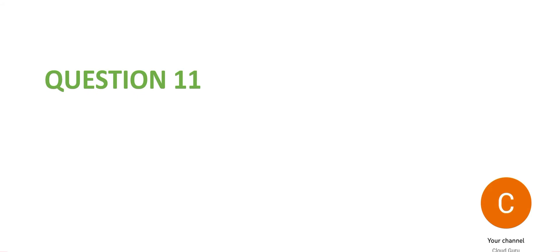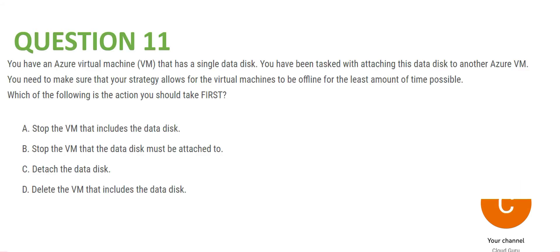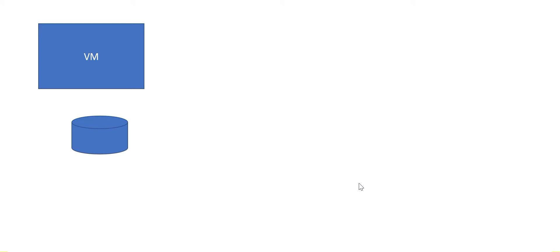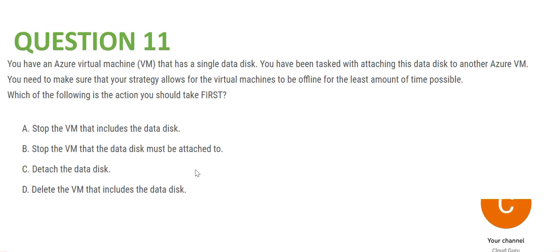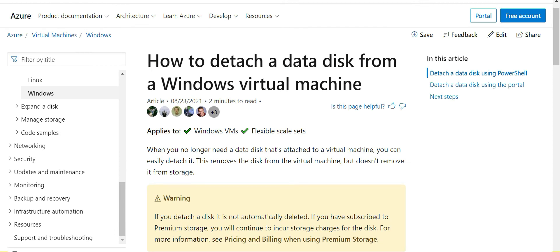Question 11: you have a VM with a disk and you want to attach that disk to a different VM. Option A says stop the VM including the data disk — that is wrong. C is the correct answer: you can directly detach the data disk as the first step. The documentation clearly confirms you can easily detach it directly.